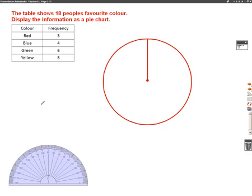So, to draw a pie chart, the first thing we're going to do is add up how many people we've got. Well, we know this is going to add up to 18 because it tells me in the question, but let's check anyway. Three plus four is seven, plus six is 13, plus another five gives us a total of 18.